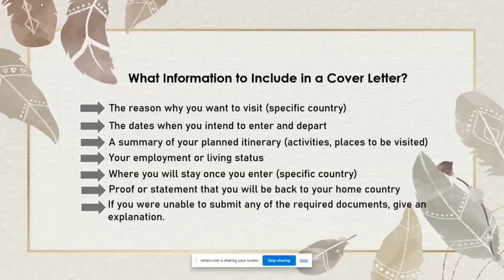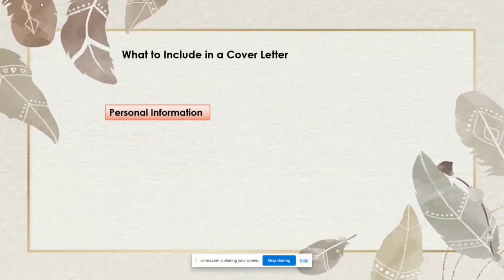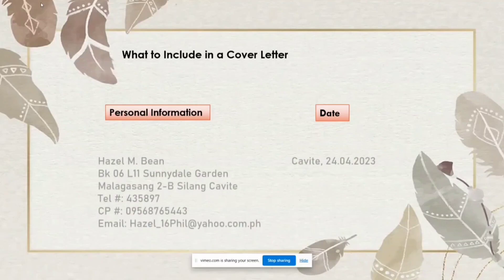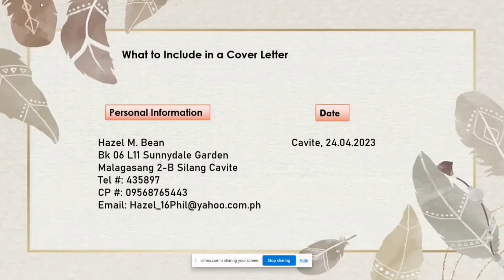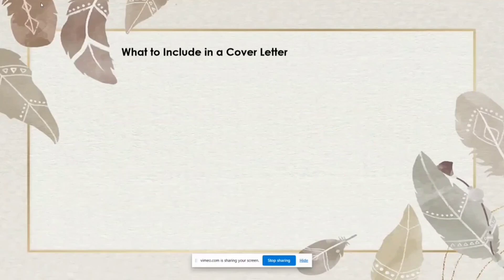Let's begin. Your cover letter should have your personal information and the date when you wrote it. For example, I have here my name, my complete address, telephone and cell phone number. Don't forget to write your email and check that it is correct, because embassies love to communicate with applicants through email. It should also have the date when you wrote your cover letter.